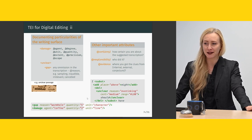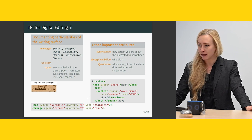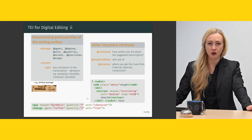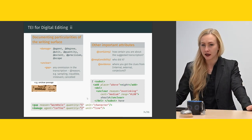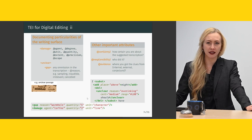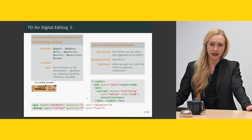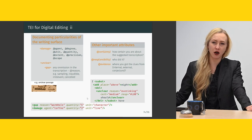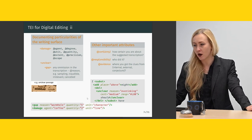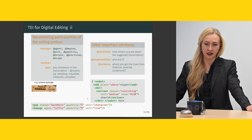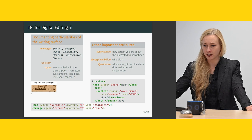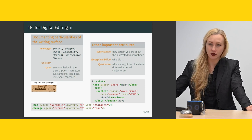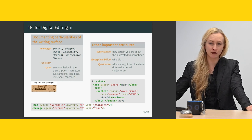I can document particularities of the writing surface, such as 'damage', where I can indicate many different attributes: agent, degree, unit, quantity, extent, extent precision, or scope. I can mark things as 'unclear'. I can use 'gap' to indicate any omission in the transcription and give a reason — sampling, inaudible (for audio transcriptions), irrelevant, cancelled — or also give an extent, how many characters I think are missing. Here is an example of a gap where the reason is 'wormhole', quantity is 5, and the unit is 'character'. So I can be pretty precise with this.